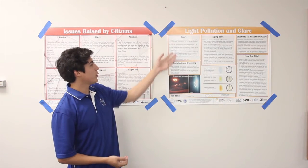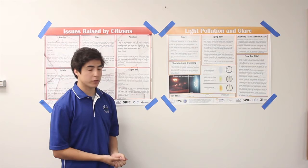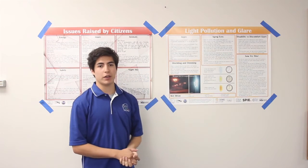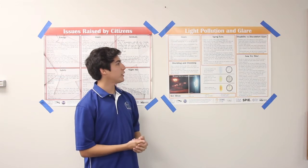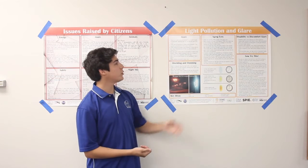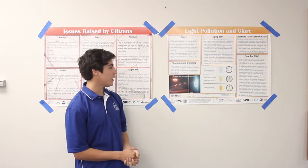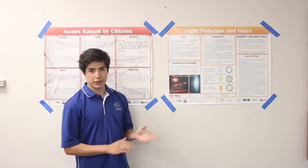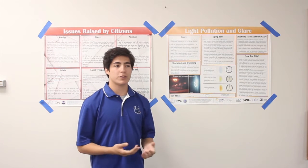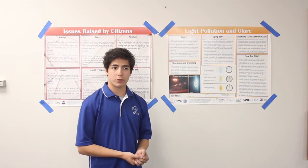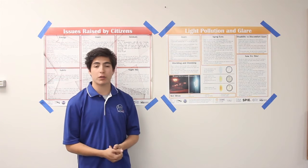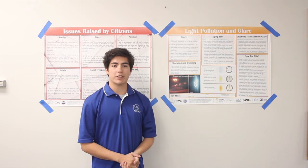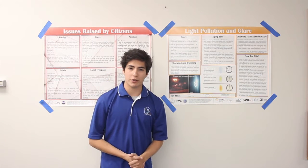We start with the GLARE section of the poster — a brief overview of what it is. We go into the two main types of GLARE: disability and discomfort. We also address a little bit about the effects on aging eyes. Down here we have some key ideas provided so that if students are interested in further research they can Google these key phrases to gain a better understanding.